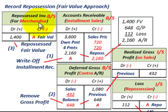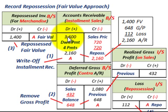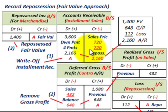For the repossessed inventory account, we debit it for $1,400 — that's the fair value at repossession. Moving to accounts receivable: originally we had the sales price, then we reduced it by the down payment of $720 and the four payments received of $720. The resulting balance in accounts receivable at repossession is $2,160. We write off the installment accounts receivable by crediting it for $2,160.